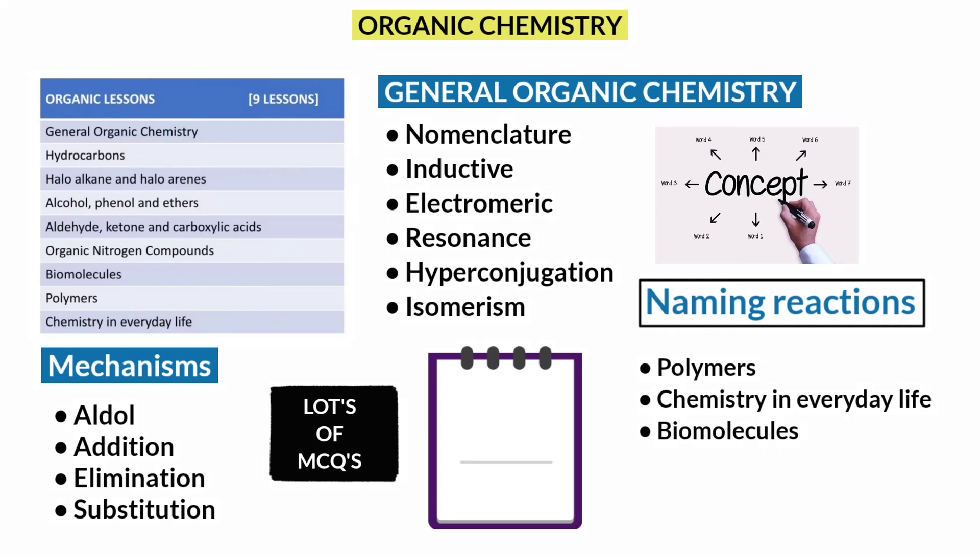And finally, don't skip polymers, chemistry in everyday life and biomolecules. These chapters are very easy and you can easily answer 3 questions from these chapters. These are the general strategies to follow to master organic chemistry.